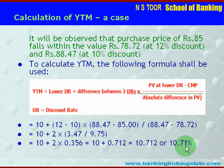So the YTM is 10.71%. As mentioned, manual calculation of YTM is a lengthy process. In another video, we have shown the calculation using an Excel function, which is very quick. Thank you friends for watching this video.